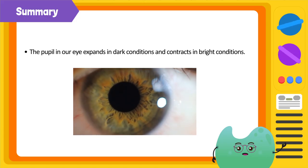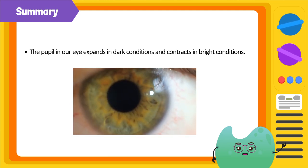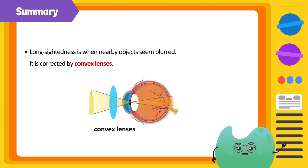Now let's summarize what we've learned. The pupil in our eye expands in dark conditions and contracts in bright conditions. Short-sightedness is a condition where faraway objects seem blurred. It is corrected by concave lenses. Long-sightedness is when nearby objects seem blurred. It is corrected by convex lenses.